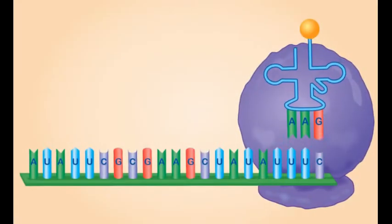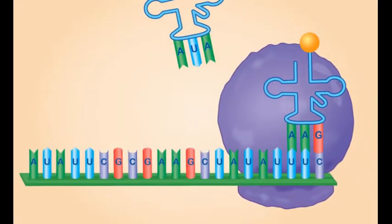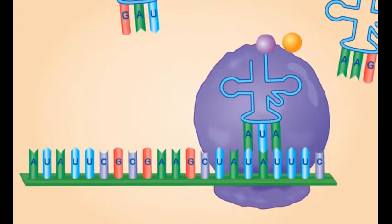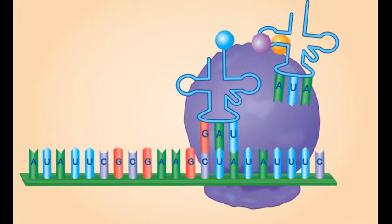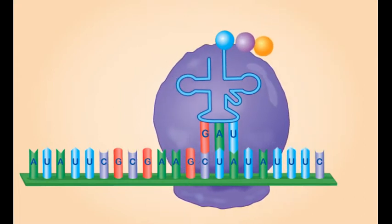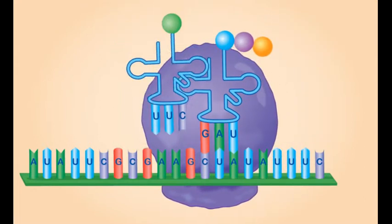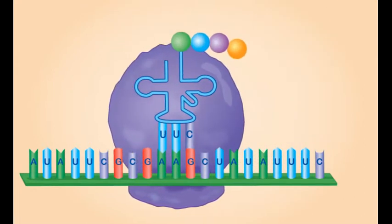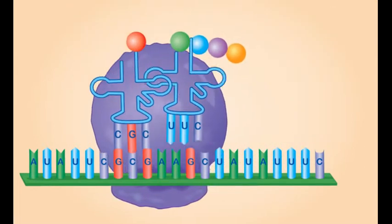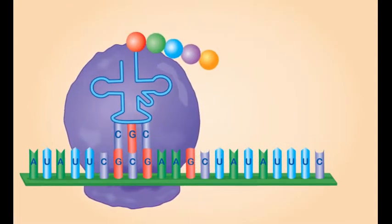Each time a tRNA anticodon and codon pair, an amino acid is added to a chain that eventually forms a specific protein.